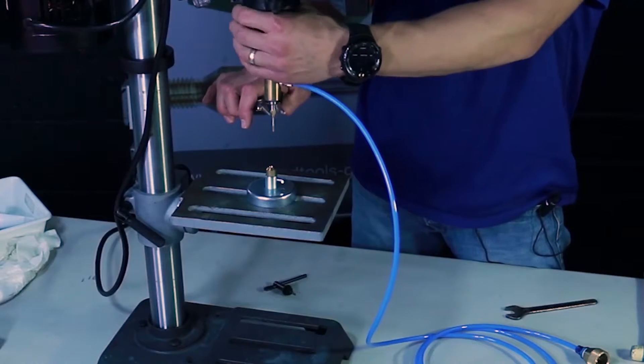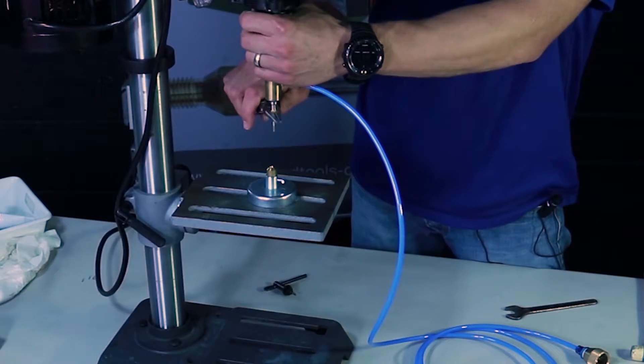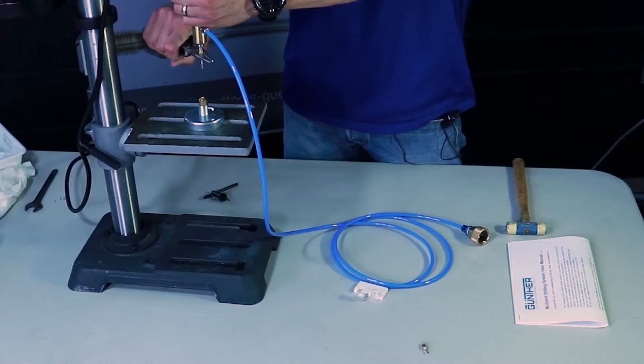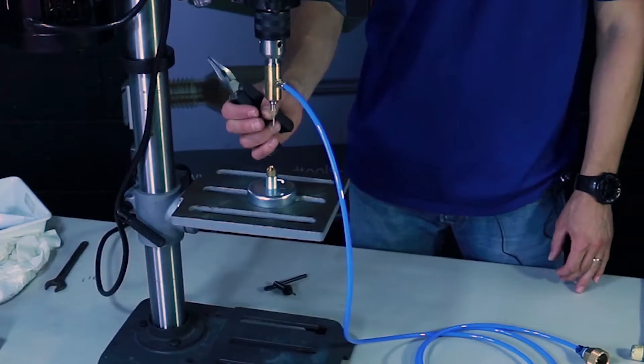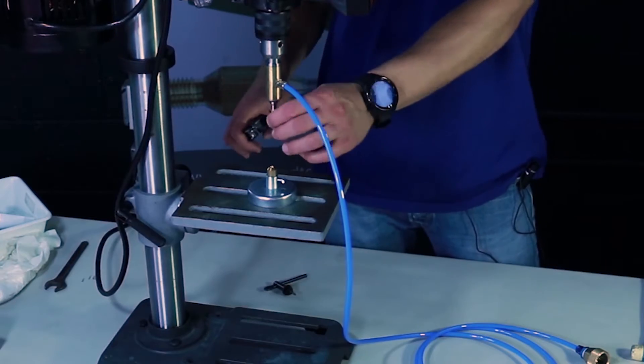And then hold your chuck and I'm using a pair of pliers and just get it snug. You're not trying to put too much pressure on it, but just get it snug so it's not going to come out.